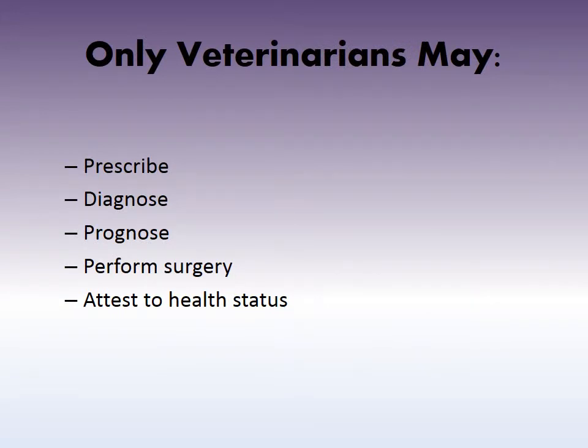The role of a veterinarian covers certain things that a veterinarian and only a veterinarian can perform: prescribe, diagnose, prognose, do surgery, and attest to an animal's health status. These are strictly done by the veterinarian and cannot be done by a veterinary technician.